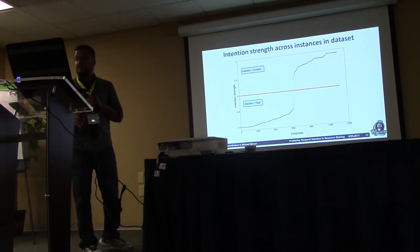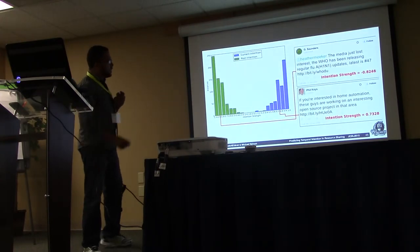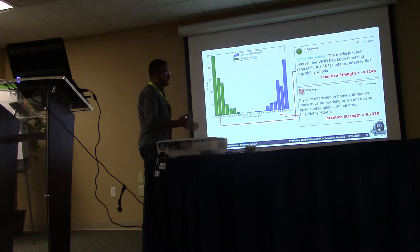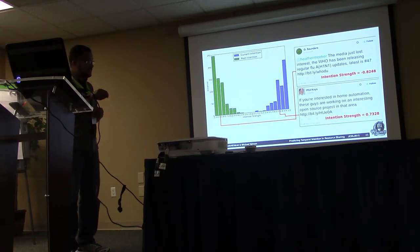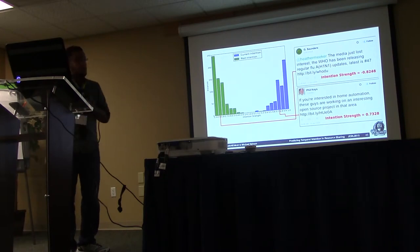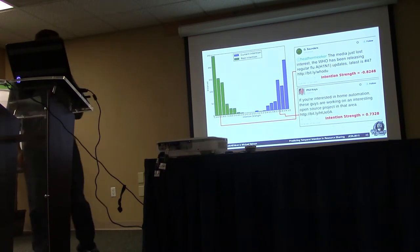We formalized intention and got an intention strength measure from negative one to one. We calculated the distribution for all samples in our training dataset and found it followed a sigmoid function, which was quite interesting. To verify — checking a sample tweet: Heather talking about H1N1 outbreak has an intention strength of negative 0.82, meaning 82 percent confident it points toward the past version. Someone tweeting about a new startup project has an intention strength of 0.73, meaning 73 percent confident toward the current version.